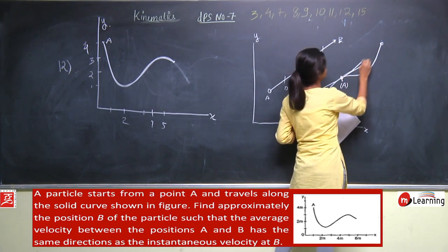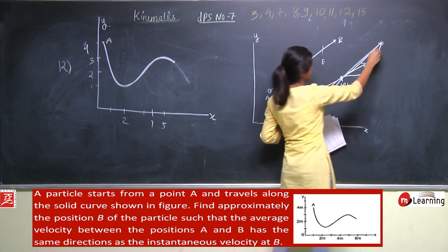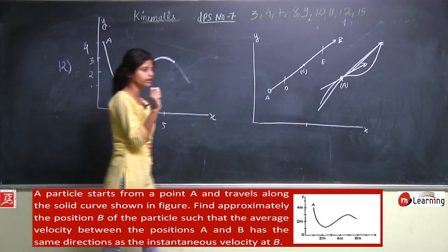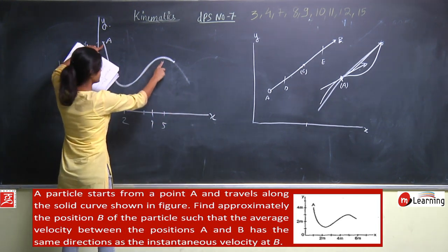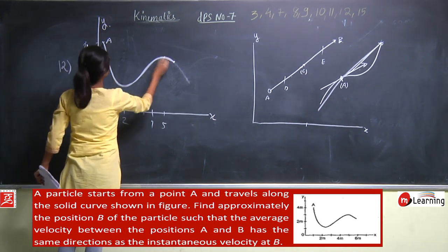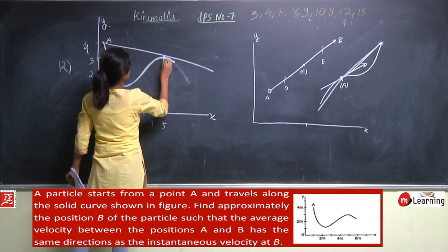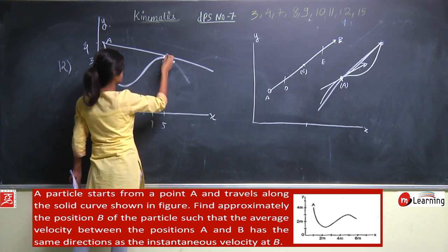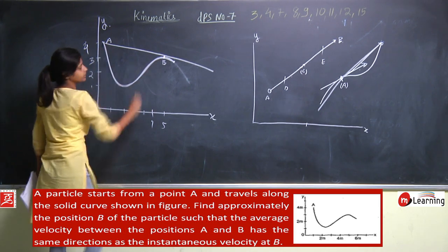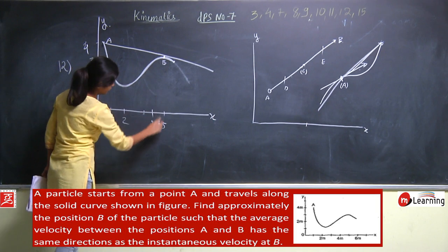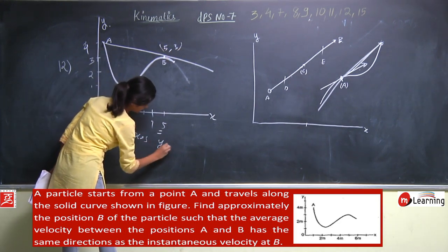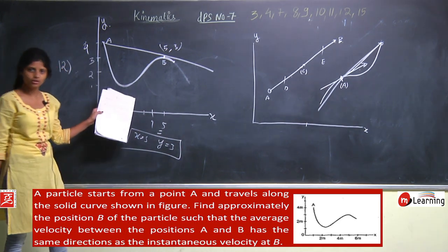We need to find a point on this curve where the average velocity direction from A to that point equals the instantaneous velocity direction at that point. This is possible when the line from A to point B is tangent to the curve at B. The instantaneous velocity direction at B equals the direction of average velocity from A to B. Approximately, the x coordinate is around 5 and y coordinate is around 3. So this is x equal to 5 and y equal to 3. You just needed to find the coordinates of B.